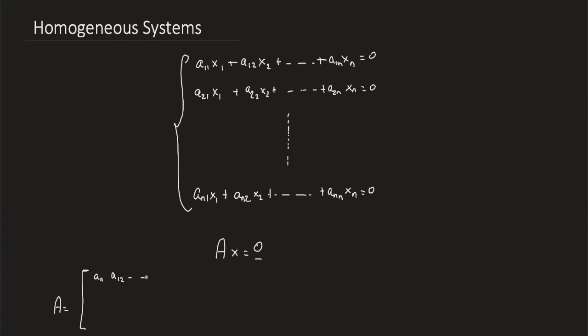The matrix A contains elements A11, A12 down to A1n, A21, A22 down to A2n, all the way to An1, An2 till Ann. The vector x contains the variables x1, x2 all the way down to xn.